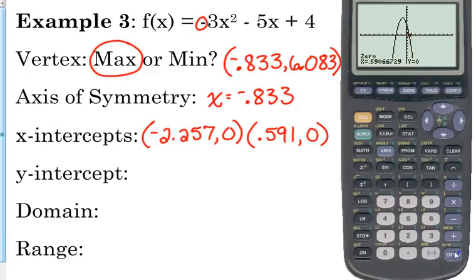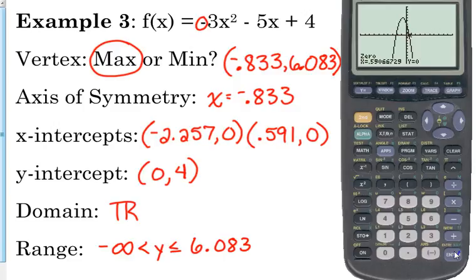Now, the y-intercept, we really don't need the calculator for that. It's always the constant on the end. So the y-intercept is 0, 4. The domain is all real numbers, and the range is a maximum, so it's from negative infinity to the y-value of the vertex, 6.083.